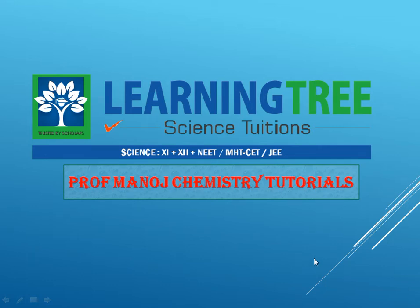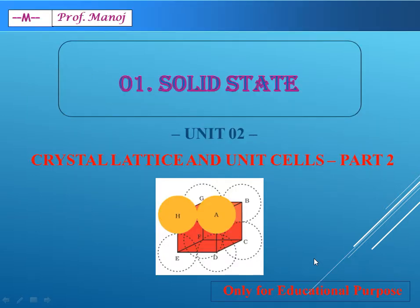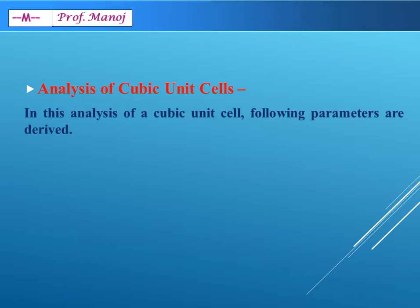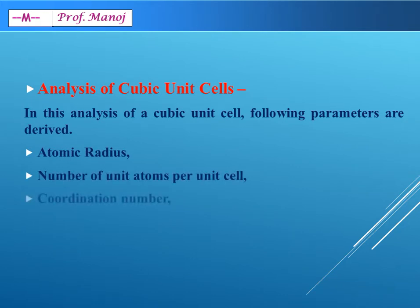Hi students, today we will be continuing with the second part of the second unit of crystal lattice and unit cells. When we consider cubic unit cells, there are certain parameters we analyze. The parameters are derived with geometrical calculations and these parameters are atomic radius, number of atoms per unit cell, coordination number, and density of the unit cells.